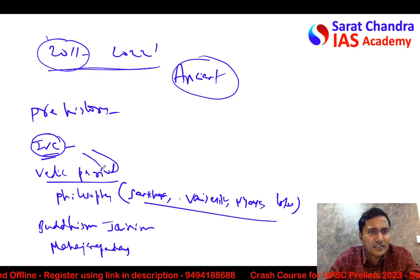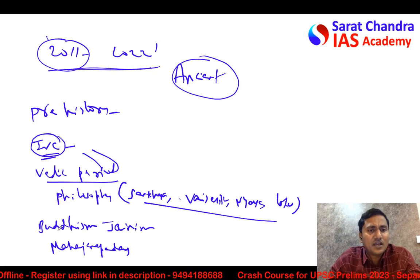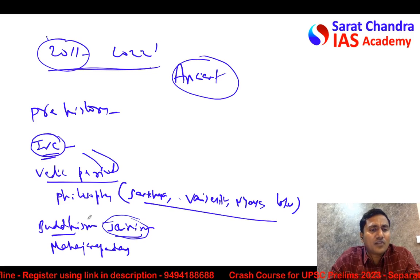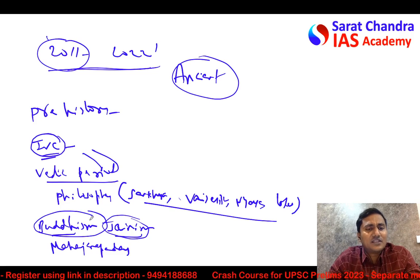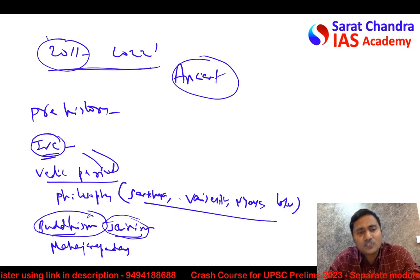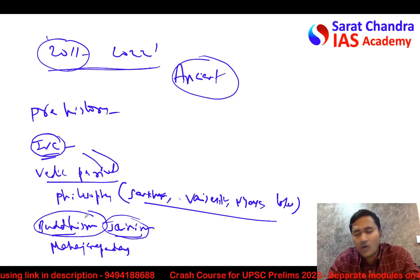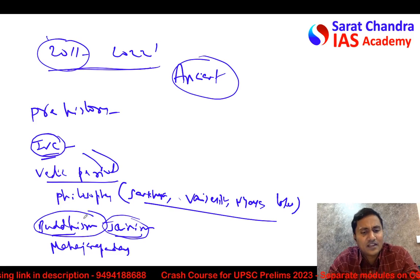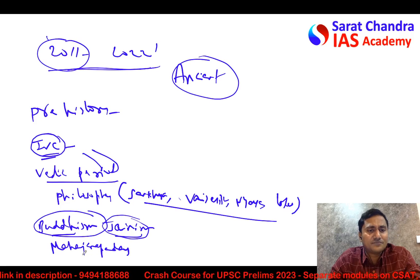Buddhism and Jainism are always the very favorite topics of UPSC. Every year they ask questions, and generally the difficulty level of Buddhism and Jainism questions is very high. So you have to read as many sources as possible — don't stick yourself to any one or two sources. Whatever material you find on Buddhism and Jainism, just read it because the difficulty level is increasing.